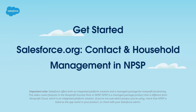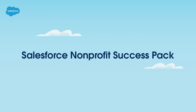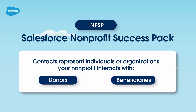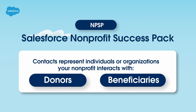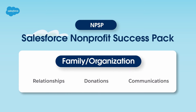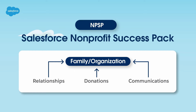Or check with your Salesforce admin. In this video, you'll learn how to manage contacts and households in the Salesforce Nonprofit Success Pack (NPSP). In NPSP, contacts represent individuals or organizations your nonprofit interacts with, such as donors or beneficiaries. Household management in NPSP allows you to group related contacts together, typically within a family or organization, making it easier to track relationships, donations, and communications among them.